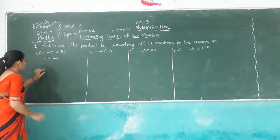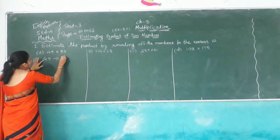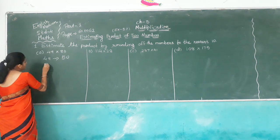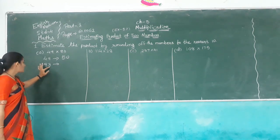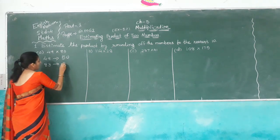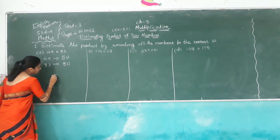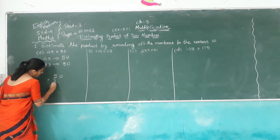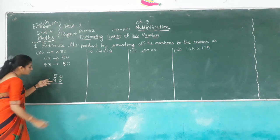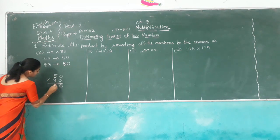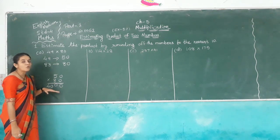Now 49: the ones digit is 9, which is more than 5, so add 1 to make 50. And 83: the ones digit is 3, which is less than 5, so we write 80. Now multiply: 50 multiplied by 80. Count tens place — keep one 0. 8 times 0 is 0, 8 times 5 is 40. So the estimated answer is 4,000.